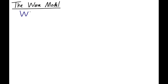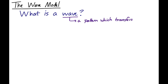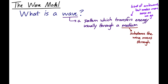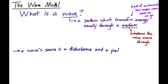Let's take a look at the wave model. We're going to begin by considering: what is a wave? Fundamentally, a wave is a pattern — a pattern which transfers energy, usually by moving through a medium. A medium in this context is just what the wave is traveling through. With a wave, there is some kind of disturbance as a source, and there is a pattern which moves away from the disturbance and carries energy with it.